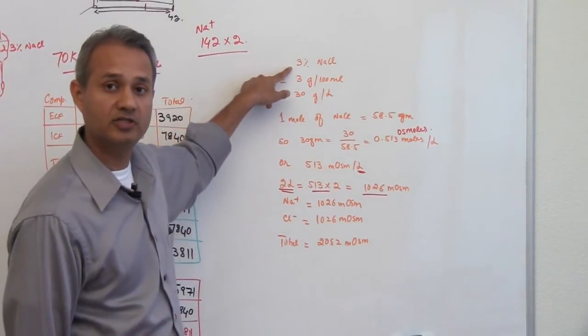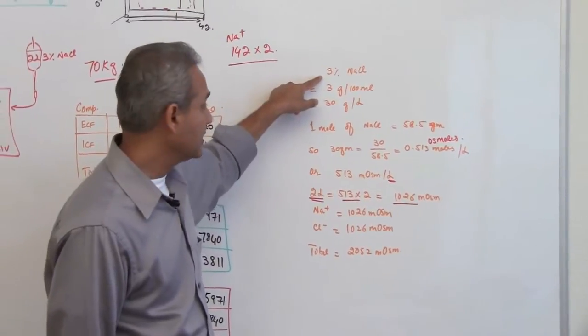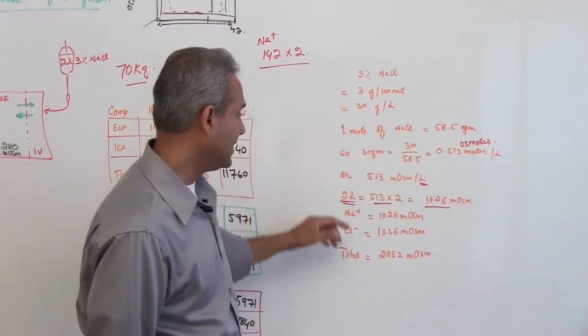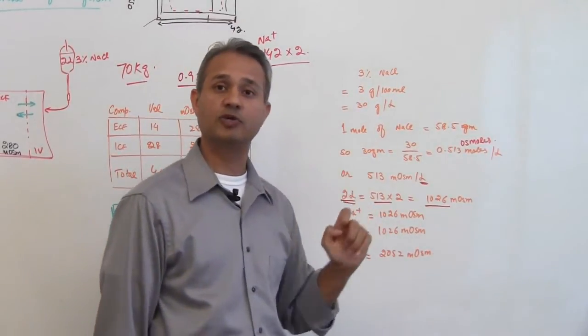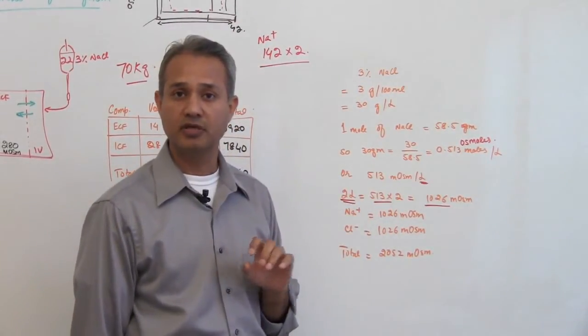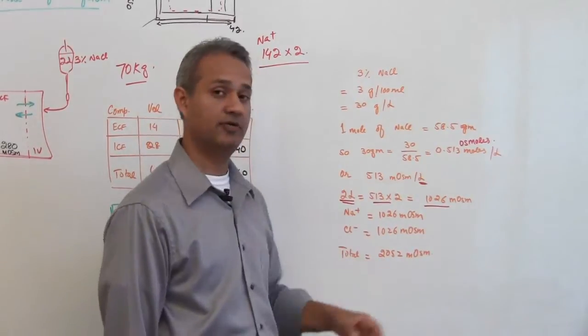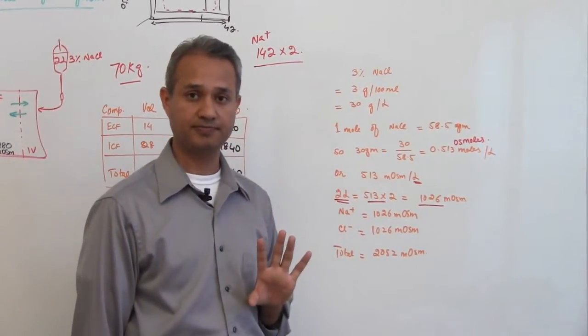What we are saying is if we add 3 percent sodium chloride solution to a person, then every liter will bring about 1026 milliosmoles and 2 liters will bring 2052 milliosmoles.